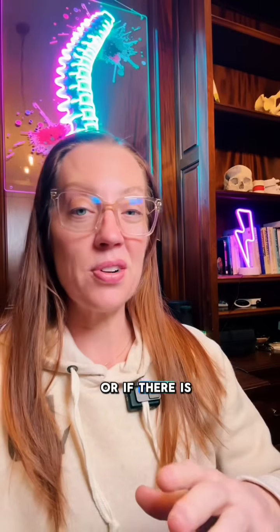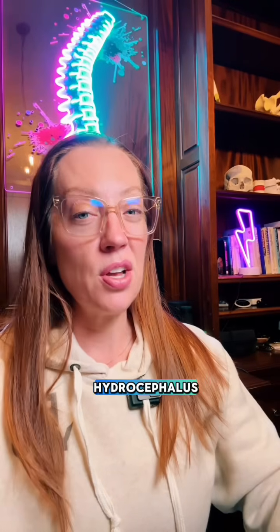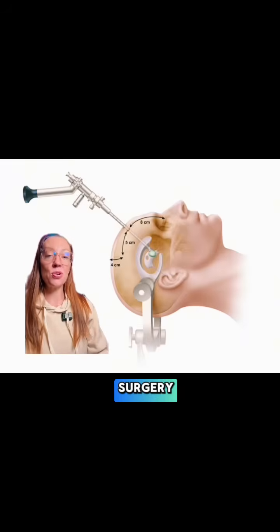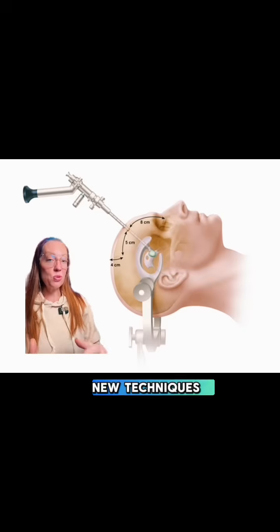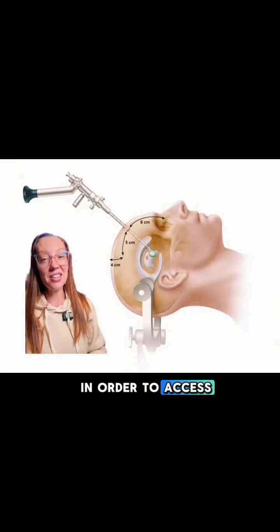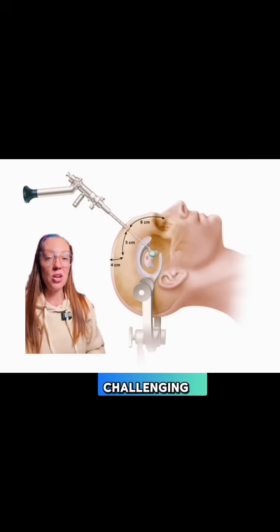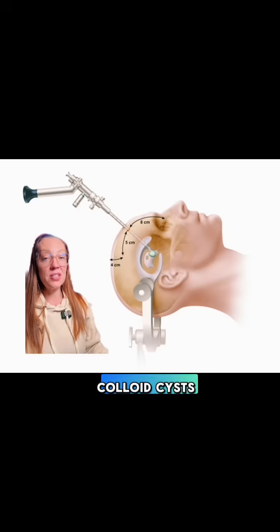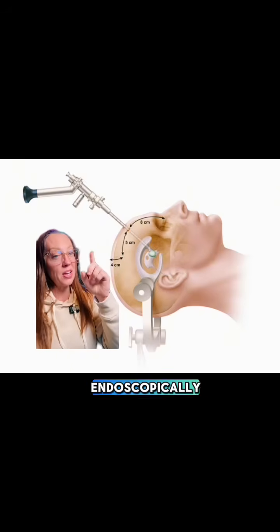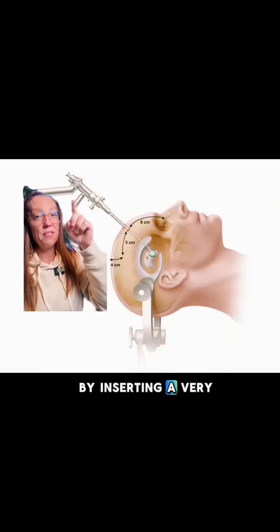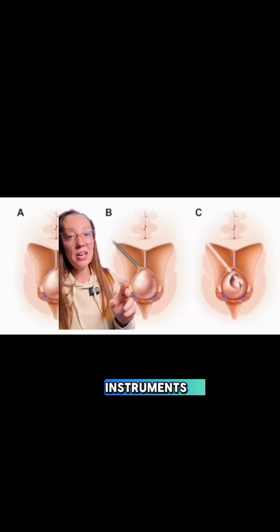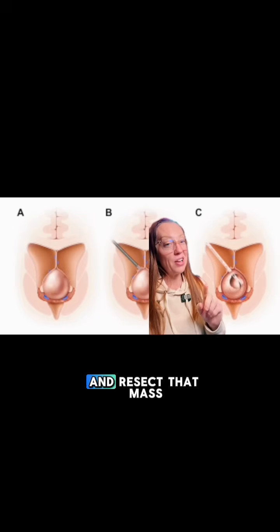If the mass is large or if there are any signs of hydrocephalus, surgery is usually indicated. But it's deep in the brain — how do we get them out? We have developed so many new techniques to access areas of the brain that used to be challenging with open surgery. In cases of colloid cysts, they are typically removed endoscopically by inserting a very small camera deep into the brain and using special instruments to get in there and resect the mass.